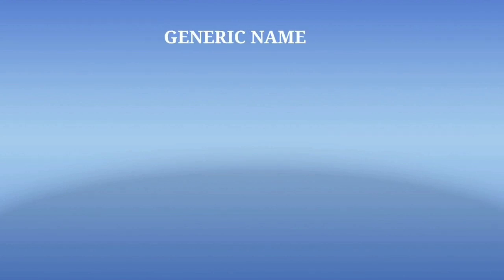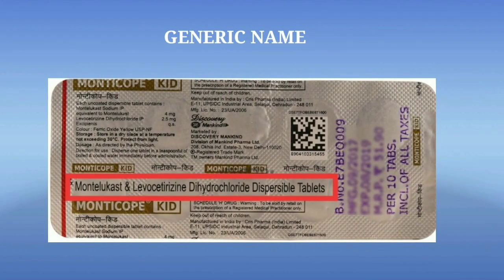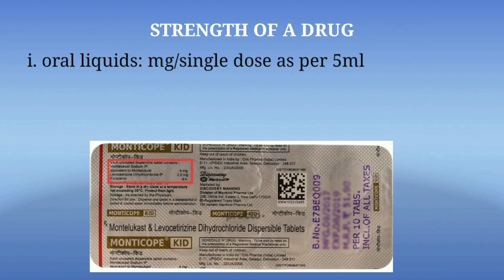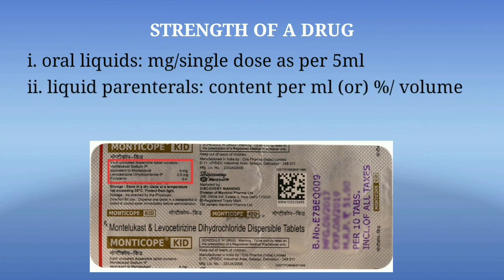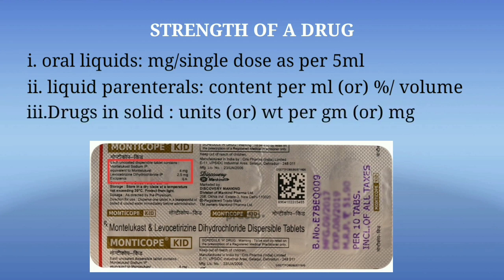The next one is generic name — a term that refers to the chemical makeup of a drug rather than the advertised brand name under which the drug is sold. The next one is strength of a drug. It is present in the form of liquids or solids. For oral liquids, it is expressed as mg per single dose per 5ml. For liquid preparations, it is content per ml or percentage by volume. For a drug in solid form, it is expressed in the form of weight — grams or mg.